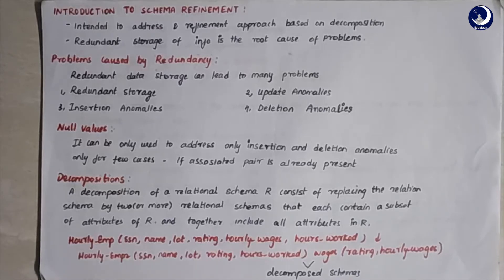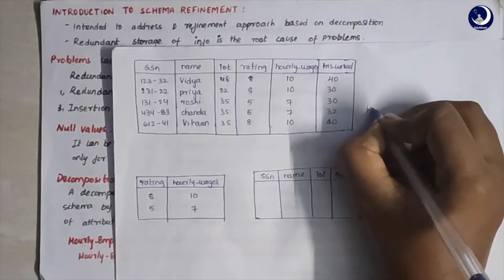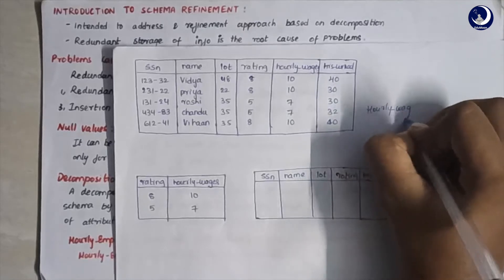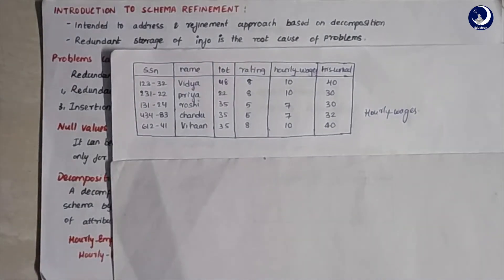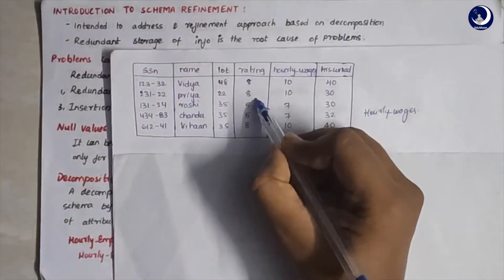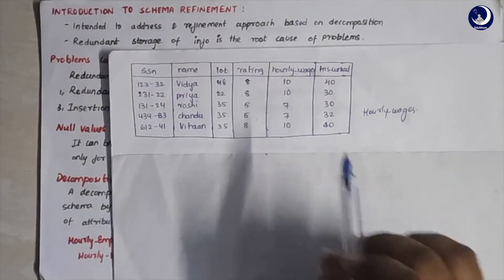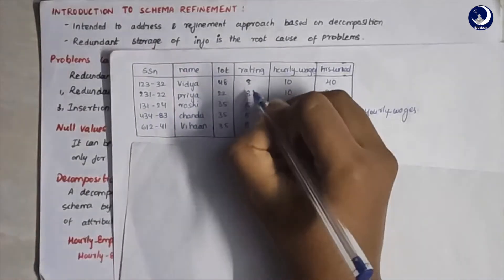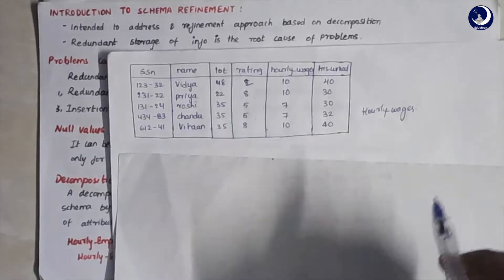Let's take an example to understand this better. Here we have an hourly wages table with columns like SSN, name, lot, rating, hourly wages, and hours worked. Observe that the rating value 8 is repeated three times and the hourly wages are repeated in the same way — wages are calculated depending on the rating value: for rating 8 the wage is 10, and for rating 5 the wage is 7.